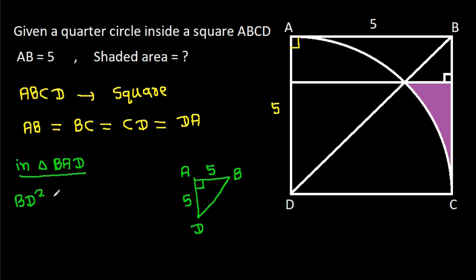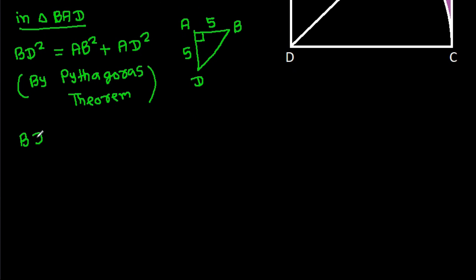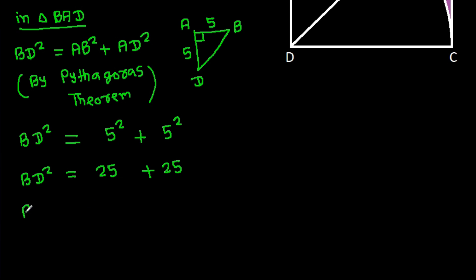So BD² will be AB² plus AD², by the Pythagorean theorem. BD² equals 5² plus 5², which is 25 plus 25, so BD² is 50. Therefore BD equals √50, which is 5√2.